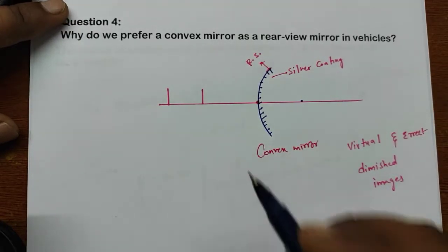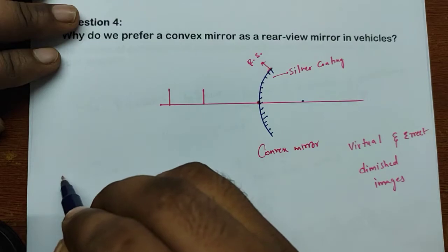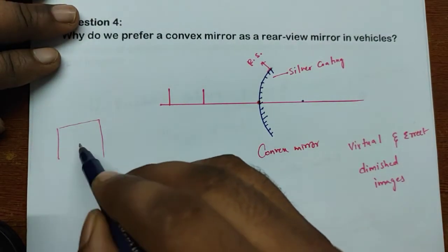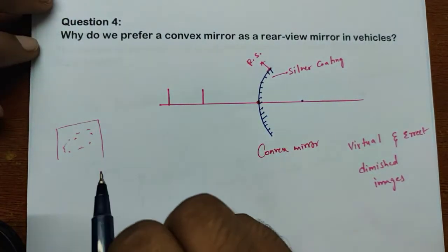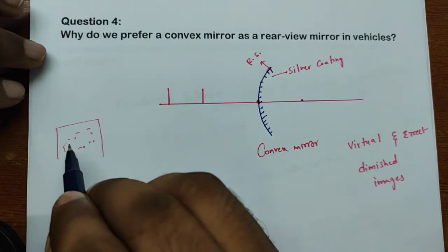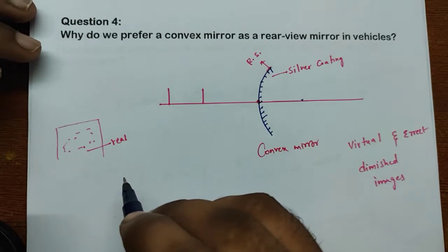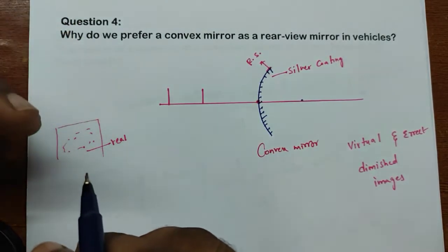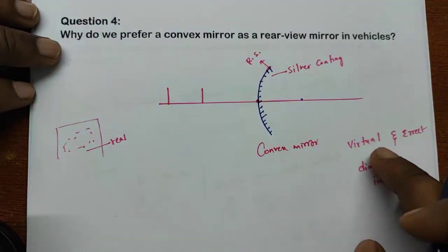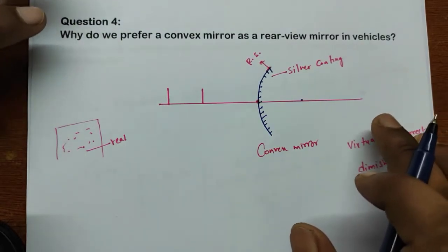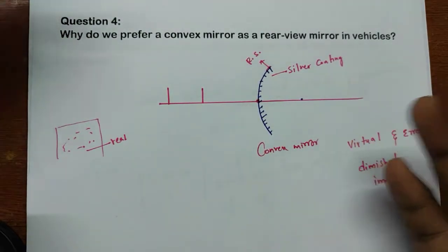Virtual means the image cannot be taken on a paper or on a screen. For example, in a movie theatre there is a screen, and from the projector the rays fall on the screen and you can see the hero and heroine — those are real images. Real images can always be taken on a screen, we need a screen for that. But in this mirror we don't need any screen because it forms virtual images. The image won't form in reality, but for us it will look like it is formed.